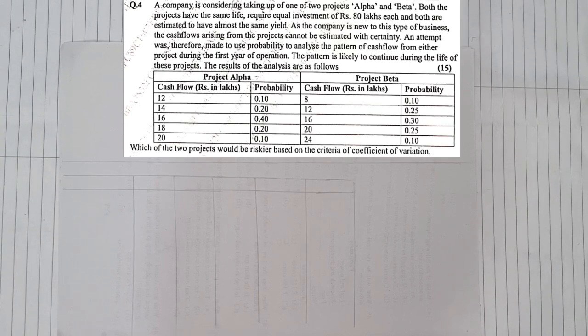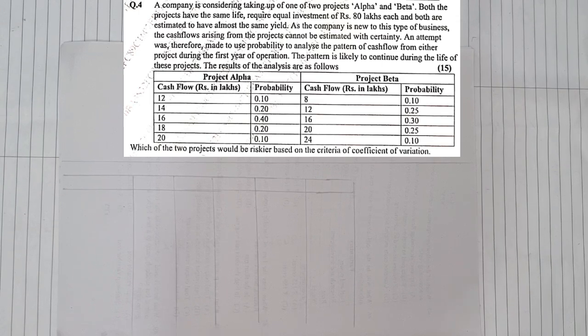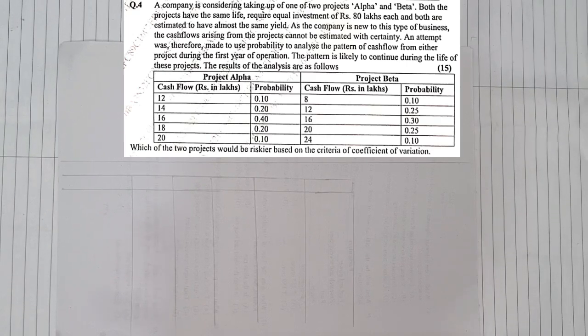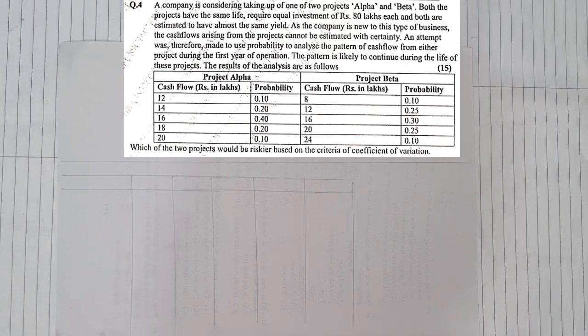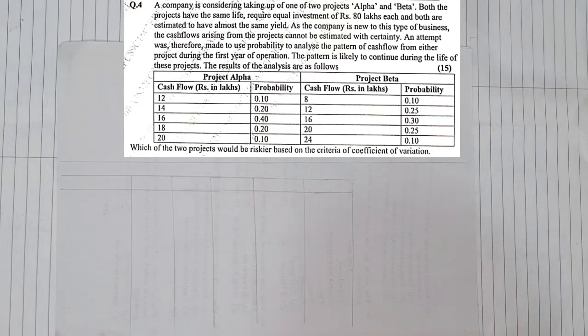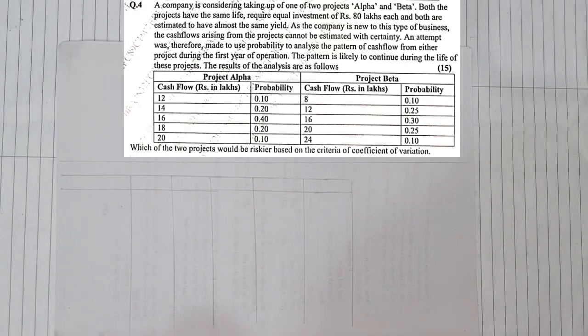An attempt was therefore made to use probability to analyze the pattern of cash flow from their project during the first year of operation. The pattern is likely to continue during the life of these projects. The result of the analysis are given below. So we have project Alpha and project Beta. They are giving you the cash flow and they are giving you the probabilities. Which of the two projects would be riskier based on the criteria of coefficient of variation.